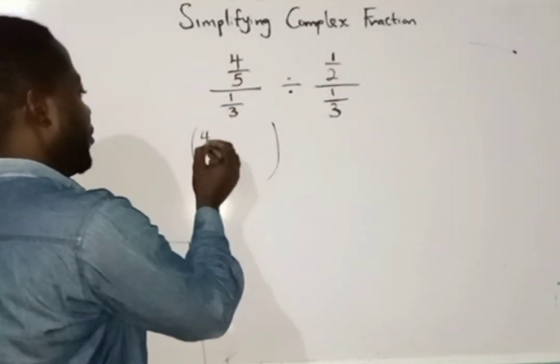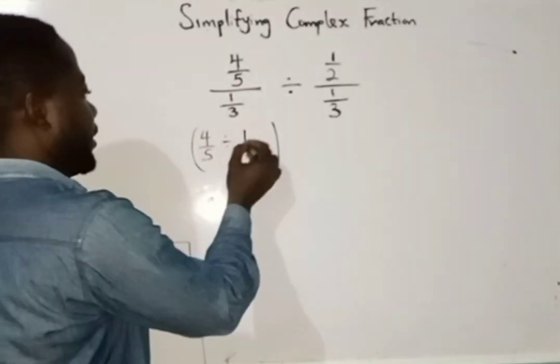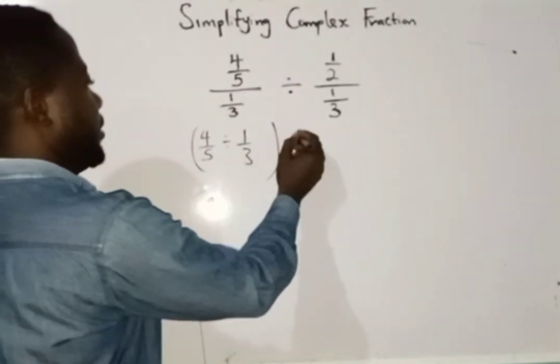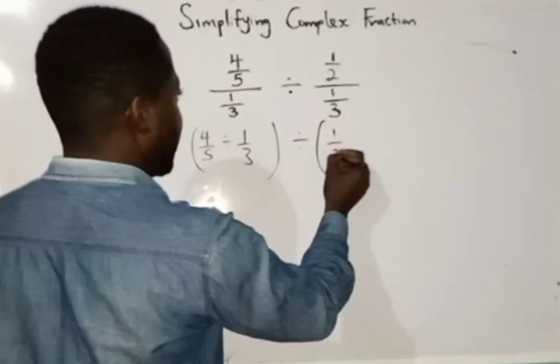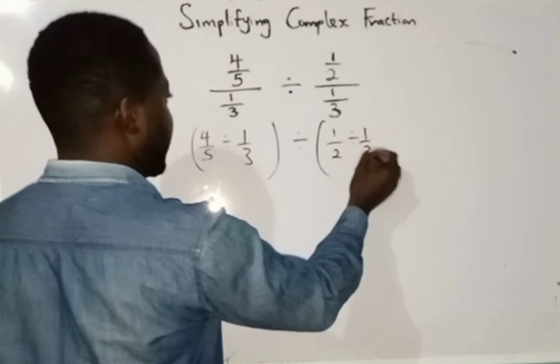So I am going to have 4 over 5 divided by 1 over 3 divided by another bracket: 1 over 2 divided by 1 over 3.